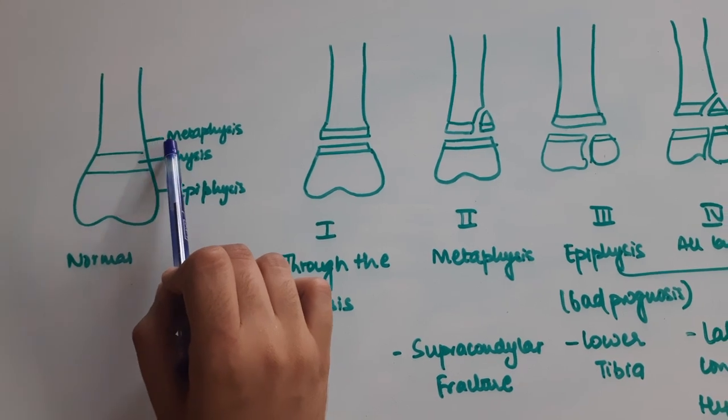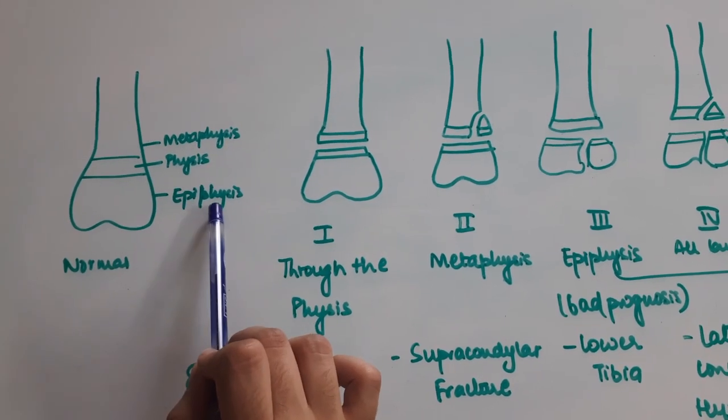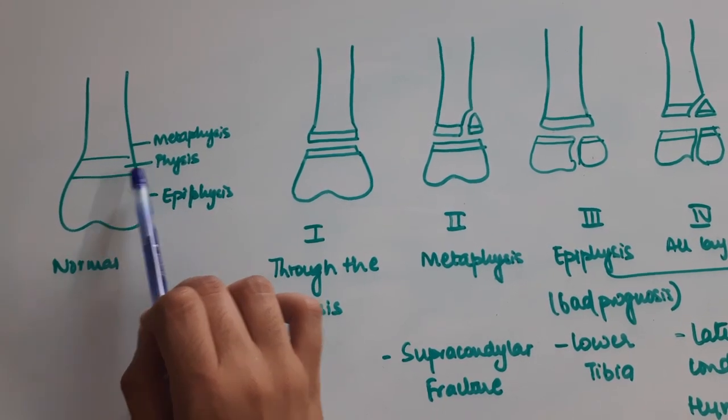In a bone we have a metaphysis which is towards the shaft, and epiphysis which is towards the head, and in between these two we have a physis.